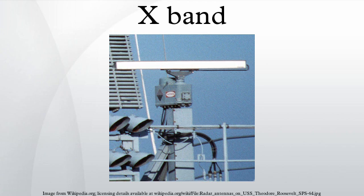Radar. X-band is used in radar applications including continuous wave, pulsed, single polarization, dual polarization, synthetic aperture radar, and phased arrays. X-band radar frequency sub-bands are used in civil, military, and government institutions for weather monitoring, air traffic control, maritime vessel traffic control, defense tracking, and vehicle speed detection for law enforcement. X-band is often used in modern radars. The shorter wavelengths of the X-band allow for higher resolution imagery from high resolution imaging radars for target identification and discrimination.